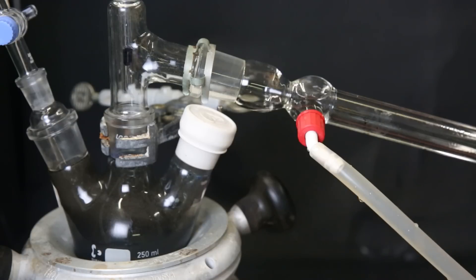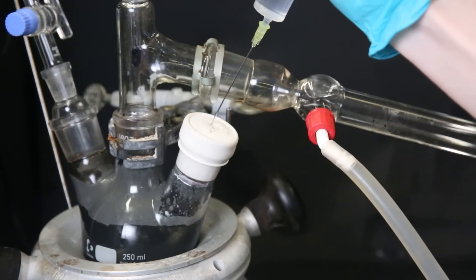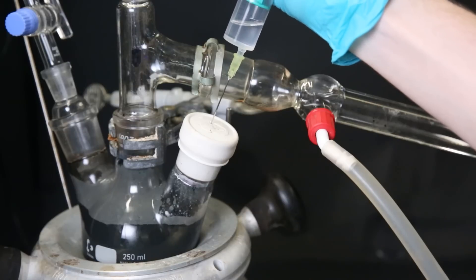In literature, they mention boiling off all of the solvent and then taking up the cobaltocene into hexane and crystallizing from there. But it didn't really work out, and honestly, I just need a cold finger to properly purify it.